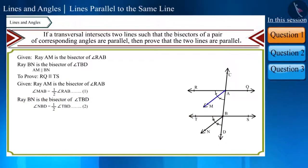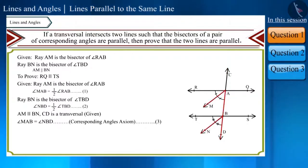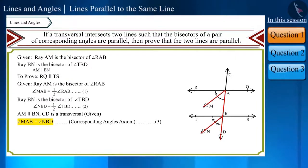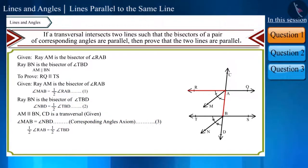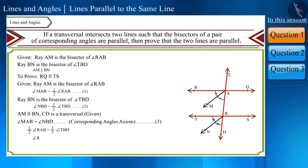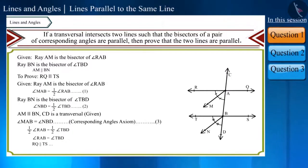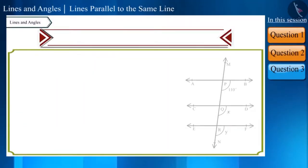Ray AM and ray BN are parallel, and CD is a transversal. Using the corresponding angles axiom, we can say that angle MAB and angle NBD will be equal. If in equation 3 we substitute the values of equations 1 and 2, we can write them accordingly. Now angles RAB and TBD are equal — these are corresponding angles made by transversal CD with lines RQ and TS. Therefore, using the converse of the corresponding angles axiom, we can say that lines RQ and TS are parallel.